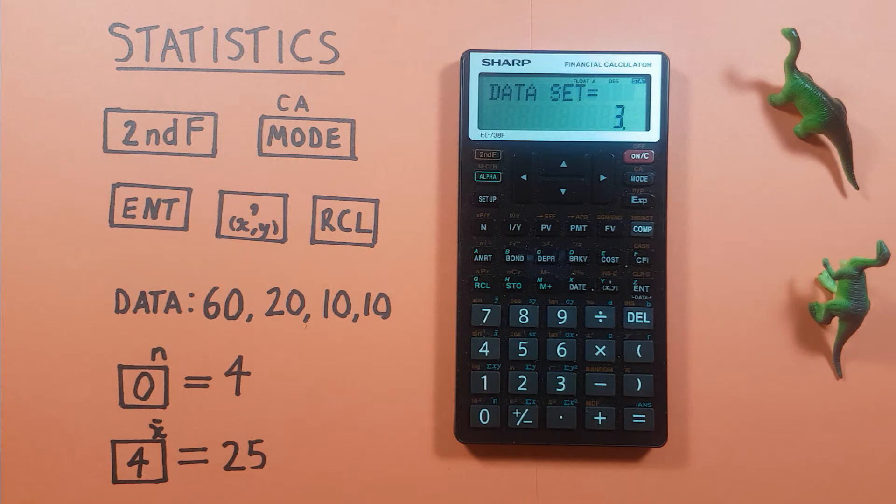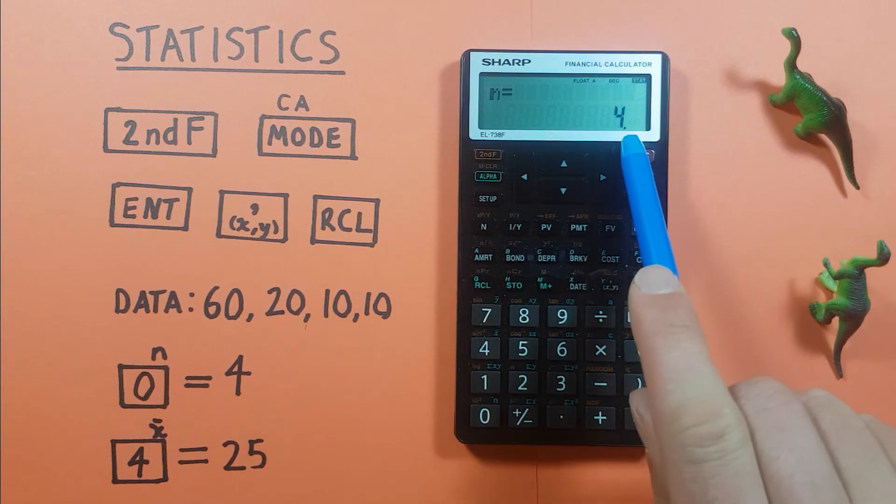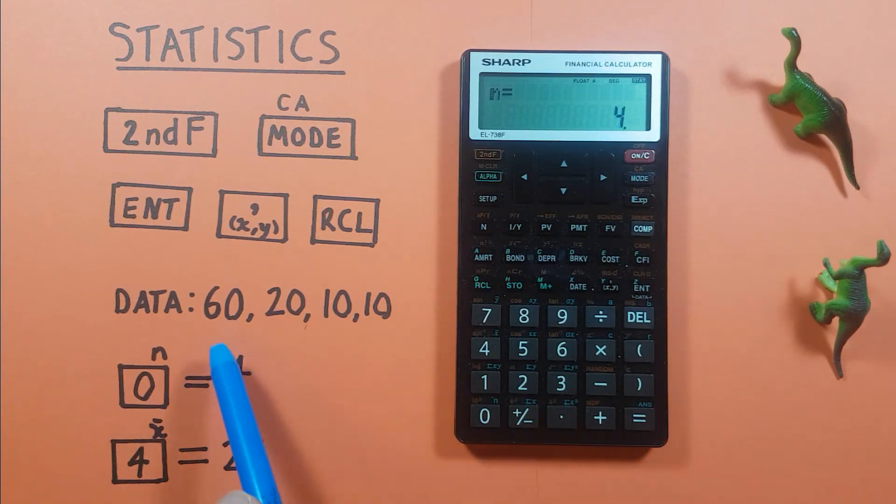Alright our data set has now been fully entered and we can start finding some stats. First let's look at n or the number of items in our data set. To get that we press the RCL key and then 0 which has the n on the top right there. And here we see n equals 4 which we know is correct because we have 4 items in our data set. Looks good.